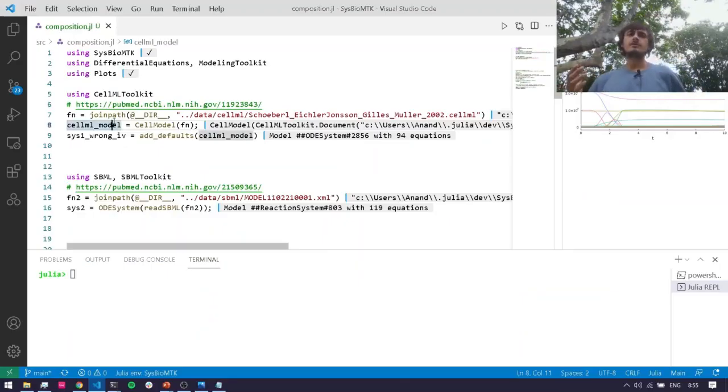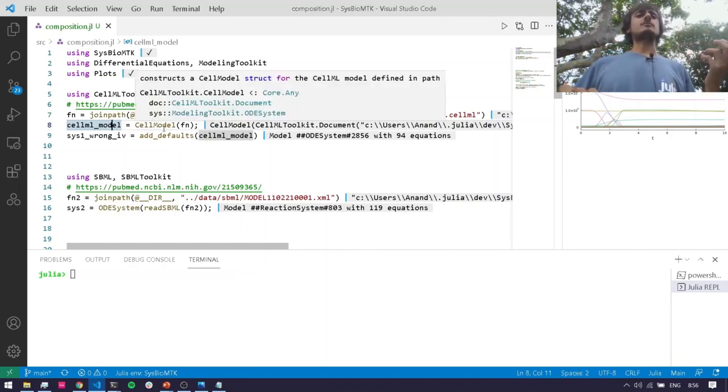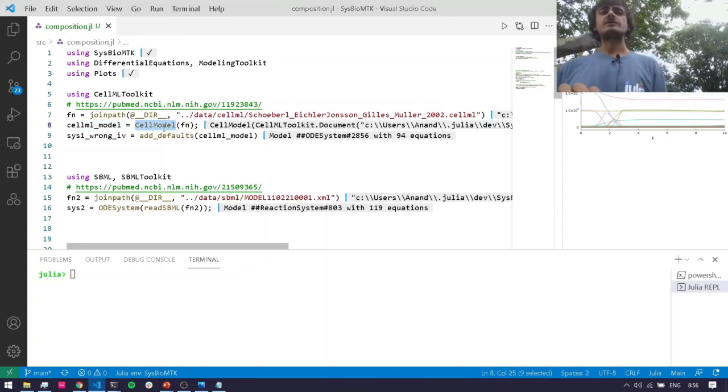Now I'm going to be doing a code demo showing some of the nice things that you might want to do in modeling toolkit to a CellML model or an SBML model. First, I'll compose an SBML model and a CellML model together. Then I'll convert that composed model into a stochastic differential equation by adding some noise.